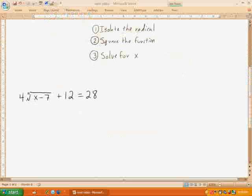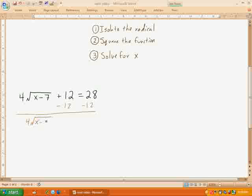Step 1, isolate the radical. Now you'll notice this time that the radical has something else in it. It's an x minus 7. And so when I do this, I'll go ahead and subtract the 12. So I'll have 4 root x minus 7 is equal to 16. And then I'll divide both sides by the 4 because that's 4 times the root. So I'll divide both sides by 4. And I've got the root of x minus 7 is equal to 16 divided by 4, which is 4.